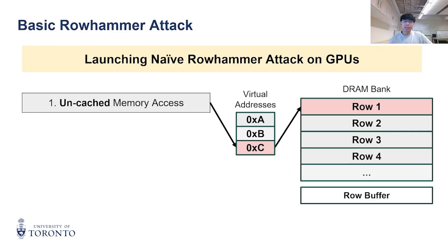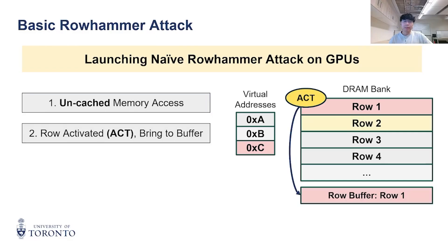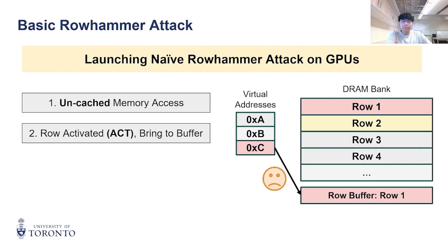In this case, 0xC is mapped to Row 1. To retrieve the data of Row 1, an activation or ACT command is issued to that row. The ACTs are the main culprit of the Rowhammer vulnerability, which disturbs the data in neighboring rows. This command opens Row 1 and brings its data to the Row Buffer for read and write.